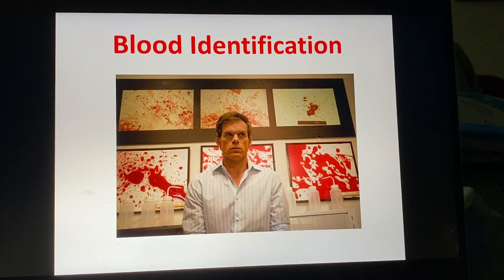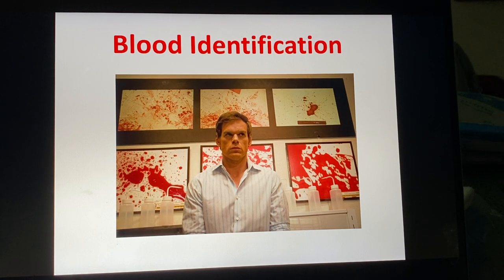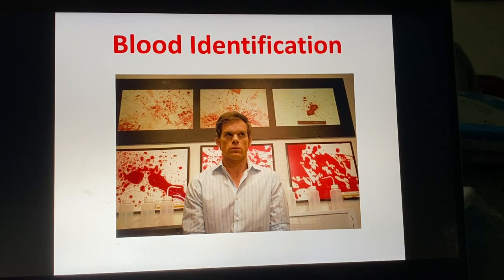Today we're starting on the topic of forensic serology, which means the identification of blood and other body fluids on items of evidence. In the unit two materials, I only give you PowerPoints on blood ID and semen ID, because those are the top two body fluids that we identify in the crime lab. There are other tests that exist for body fluids such as saliva and urine — there's even a test for fecal matter — but usually those body fluids go directly to DNA without doing any preliminary or confirmatory testing.